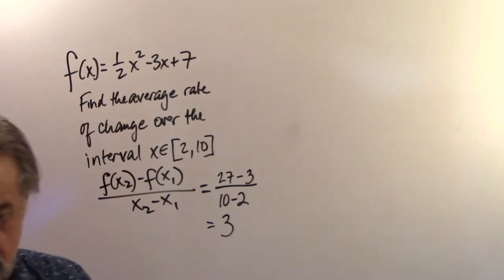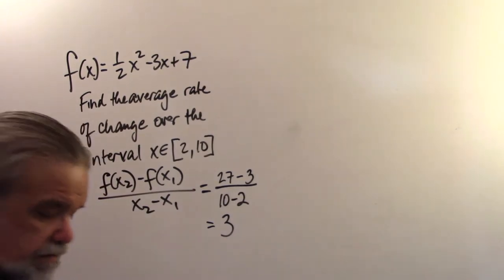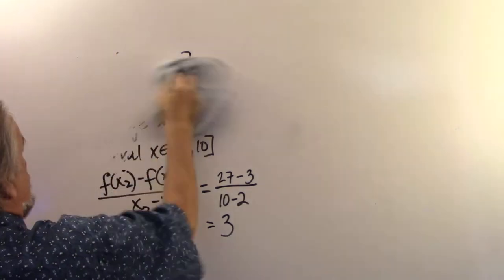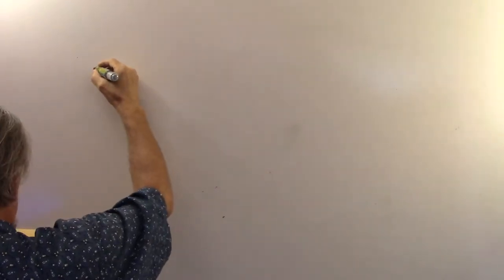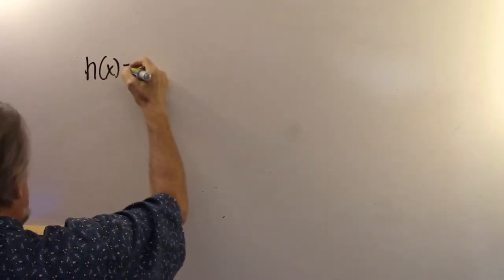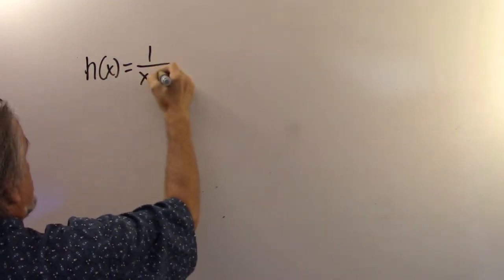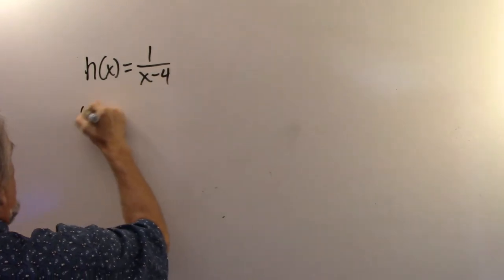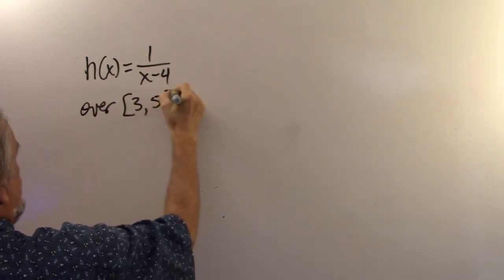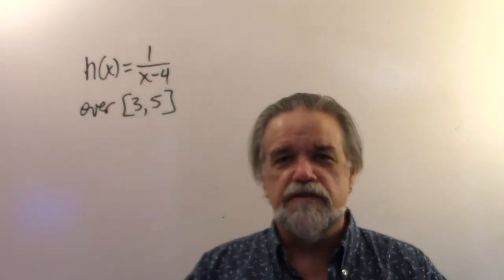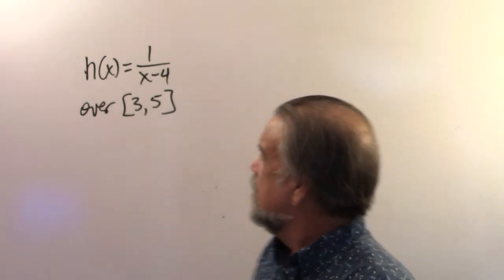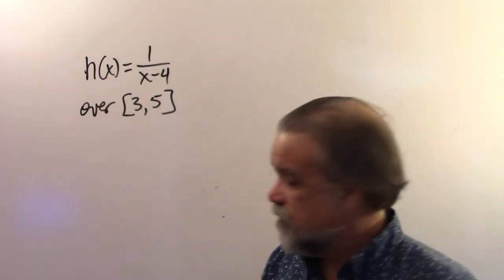So let's do h(x). h(x) equals 1 over x minus 4 over 3, 5. A rational function. I like those. Well, let's get to work here.